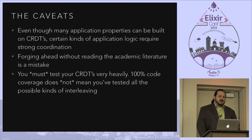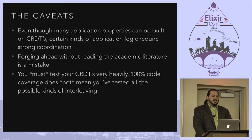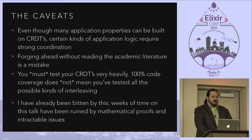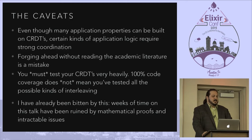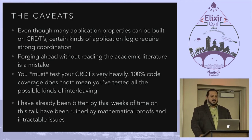If you make CRDTs, you must test them very heavily. Just because you get 100% code coverage does not mean you've covered all the possible interleavings, which is the source of a lot of different kinds of bugs. I have been bitten by this — in this kind of system, you can't out-engineer your way out of the problem with CRDTs. If your properties have logical contradictions in them, you're up against a mathematical certainty and it's just hopeless. I wasted six weeks.